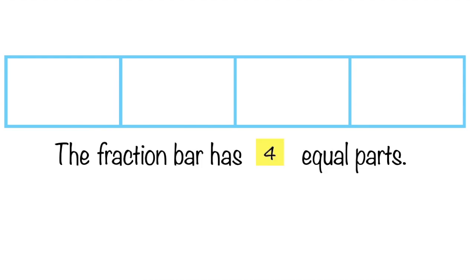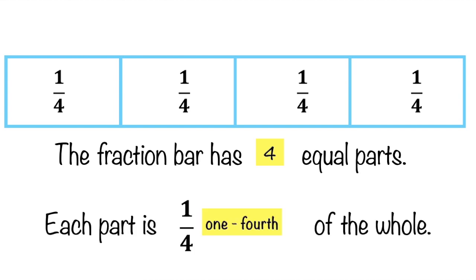Let's have this example. Is the rectangle divided into two parts? The two parts of the rectangle are not equal. Therefore, we do not call each part as one half. How about if we have this? This rectangle is divided into four equal parts, so each part is one-fourth of the whole.